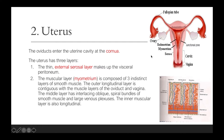The uterus has three layers. First is the thin serosa layer, the outer layer, which makes up the visceral peritoneum. Next is the myometrium, which is the muscular layer composed of three indistinct layers of smooth muscle. The outer longitudinal layer is contiguous with the muscle layers of the oviduct and vagina, while the middle layer has interlacing oblique spiral bundles of smooth muscle and large venous plexuses. The inner muscular layer is also longitudinal.